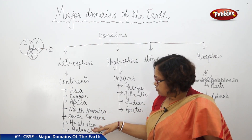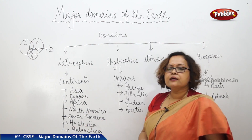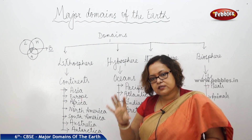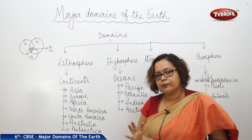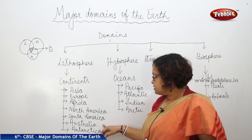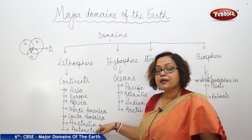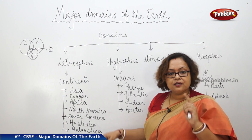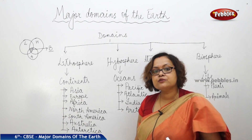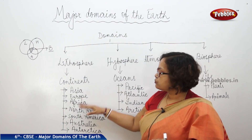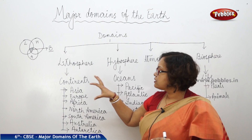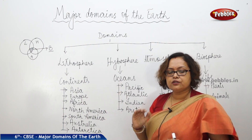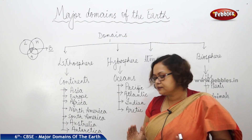Australia is an island continent — all sides of the continent are covered with water. Another important thing to remember is that Australia is a continent located in the southern hemisphere, whereas most other continents are mostly in the northern hemisphere.